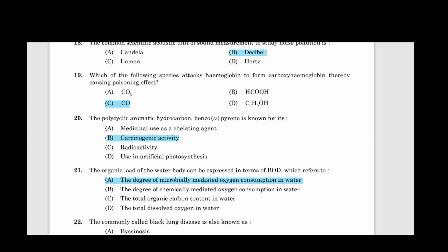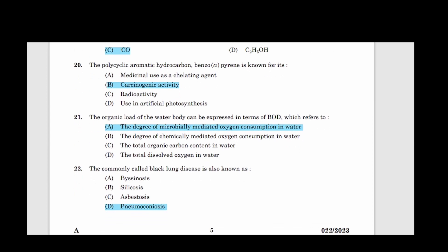Nineteenth question: Which of the following species attacks hemoglobin to form carboxyhemoglobin thereby causing poisoning effect? Correct answer option C, CO, carbon monoxide. Twentieth question: The polycyclic aromatic hydrocarbon, benzopyrene is known for its. Answer option B, Carcinogenic activity. Twenty-first question: The organic load of the water body can be expressed in terms of BOD which refers to. Answer option A, The degree of microbially mediated oxygen consumption in water.